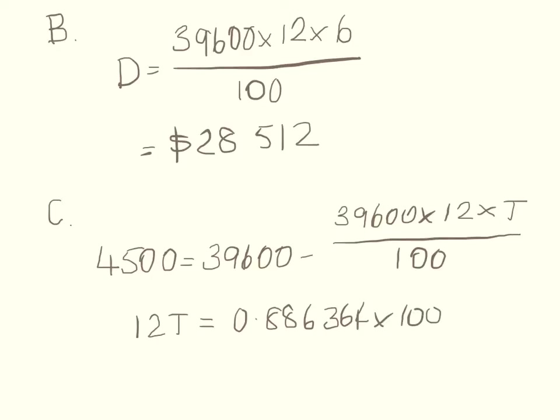But I'm going to go straight to almost the last step where we end up with 12 times the time equals 0.886364 times 100. So the time equals 7.3864 years, which is equivalent to 7 years and 5 months. Okay, there's a few more steps in there, but you actually need to go to that page 364 and see if you can follow through yourself.